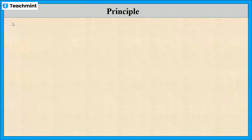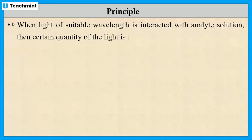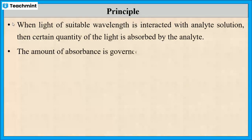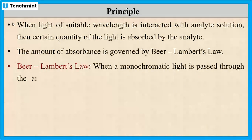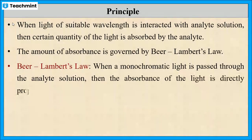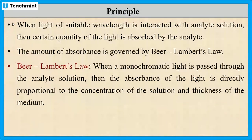Now let us see the principle of colorimetry. When a light of suitable wavelength is interacted with the sample solution, a certain quantity of the light is absorbed by the colored sample. The quantity of absorption is governed by Beer-Lambert's law. According to this law, when monochromatic light is passed through the analyte solution, the absorbance of light is directly proportional to the concentration of the solution and the thickness of the medium.